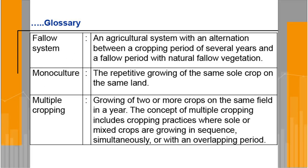Fallow system: an agricultural system with an alternation between a cropping period of several years and a fallow period with natural fallow vegetation. Here, fallow means not taking any crop — just keeping the land unused, that is fallow.